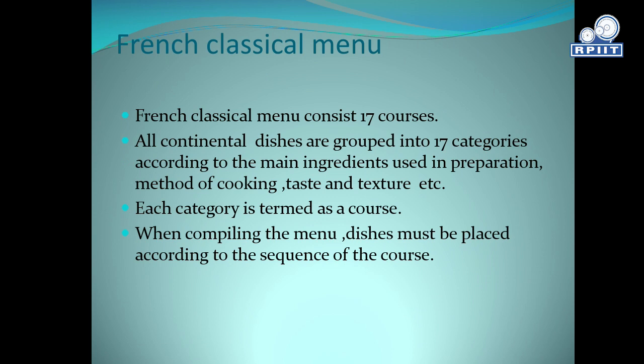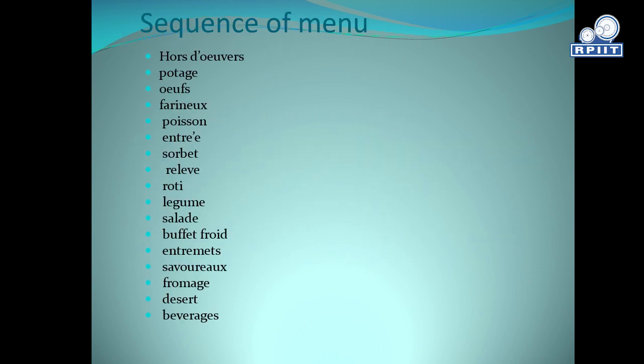The sequence of the French Classical menu is: 1. Hors d'oeuvres, 2. Potage, 3. Oeufs, 4. Farineux, 5. Poisson, 6. Entrée, 7. Sorbet, 8. Relevé, 9. Rôti, 10. Légume, 11. Salad, 12. Buffet Froid, 13. Entremets, 14. Savory, 15. Fromage, 16. Dessert, and 17. Beverages. These are the courses of the French Classical menu.